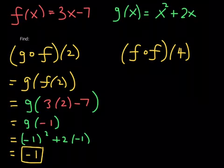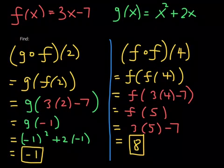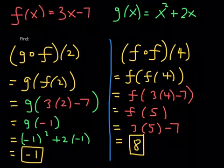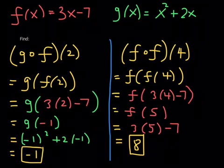Now it's time to do f composed with f at 4. It's f of f of 4, so you plug 4 into f first: 3 times 4 minus 7 is 12 minus 7, which is 5. Now plug 5 into f: 3 times 5 minus 7 is 15 minus 7, which is 8. Good job, guys. Let's look at a brand new example — we are moving to example 7.